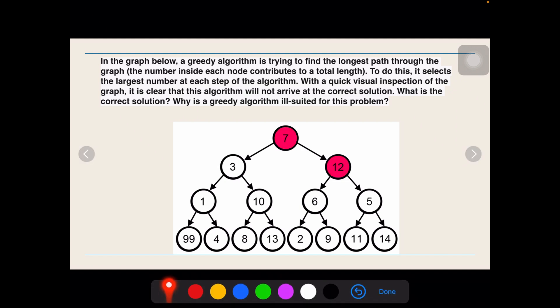Does greedy algorithm fail is our next big question. Let us see this particular question. In the graph below, a greedy algorithm is trying to find the longest path through the graph. So, we have to find the longest path through the graph. The number inside each node contributes to a total length. To do this, it selects the largest number. Now, we have learned that in greedy, we select the optimum solution at each particular step to move ahead and then we see whether it's a global maximum or a global minimum according to our need. Here, we have to find the largest path. We have to find a global maximum.